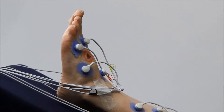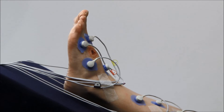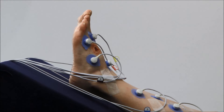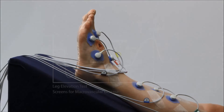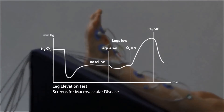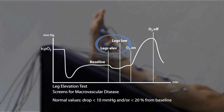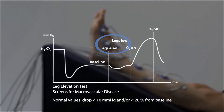It's usually done directly after the baseline measurement. Elevate the leg to a 30-degree angle, preferably using a wedge pillow, for 5 to 15 minutes. A drop of more than 10 millimeters of mercury, or more than 20% from baseline, indicates the possibility of macrovascular disease.